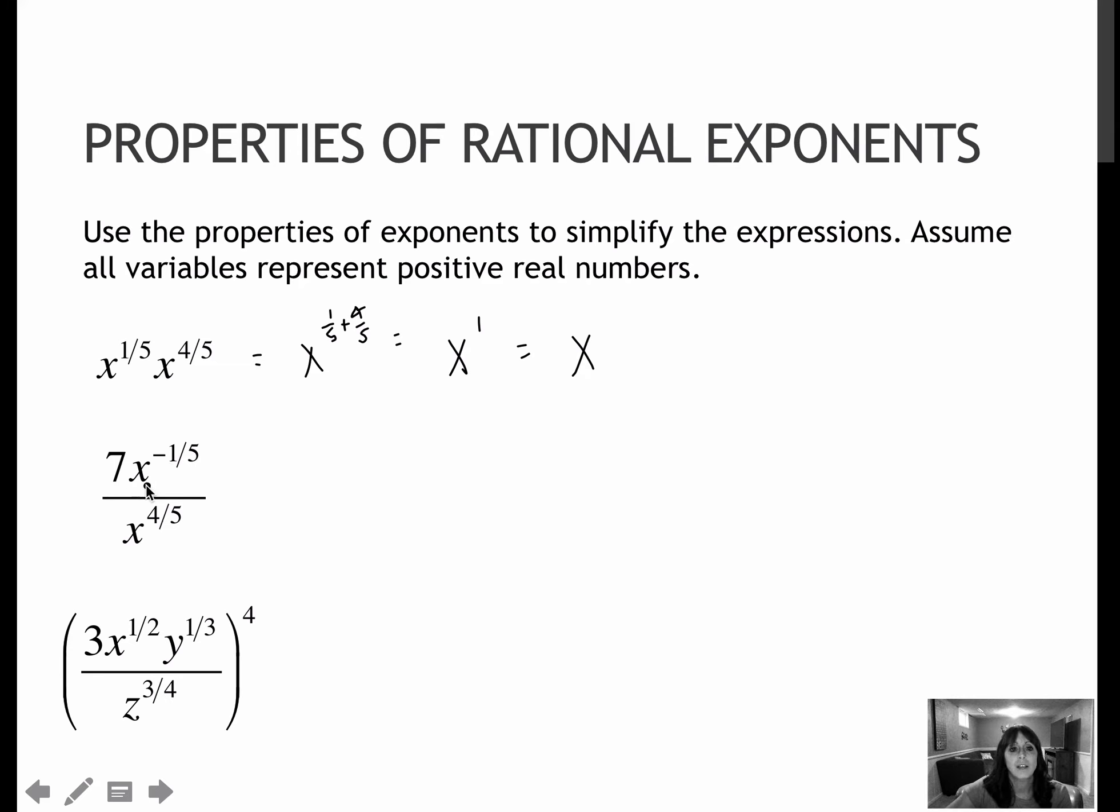Second question, I have 7x to the negative one-fifth over x to the four-fifths. I can think of this two different ways. One way is I know that this negative one-fifth is only on the x, so it's saying put that down here. So now this is gone, and I have another x to the one-fifth on the bottom, which would give me 7 on the top, and then four-fifths plus one-fifth would give me x to the first. So my answer would be 7 over x.